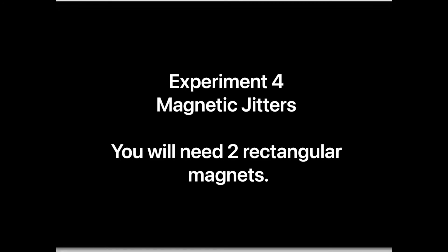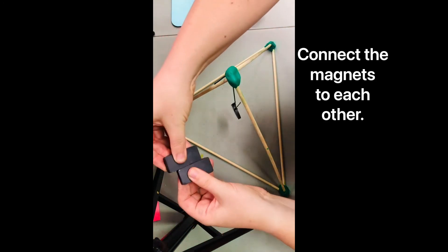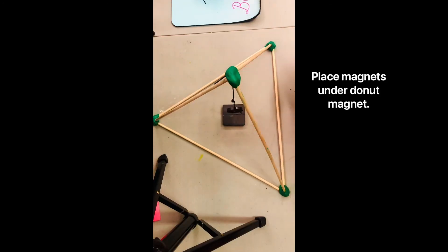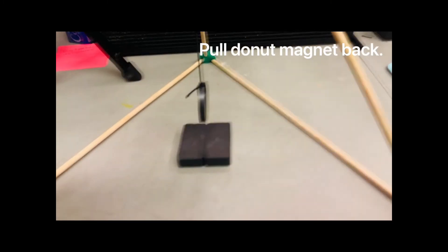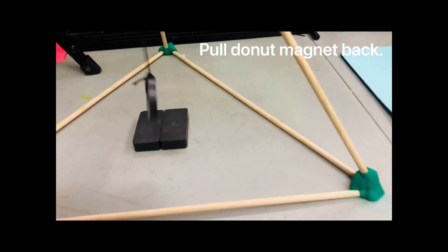And for our last experiment today you will need two rectangular magnets. Connect them side by side to each other. Place them under the donut magnet. Pull the donut magnet back and watch as the magnet responds to the tension beneath it.